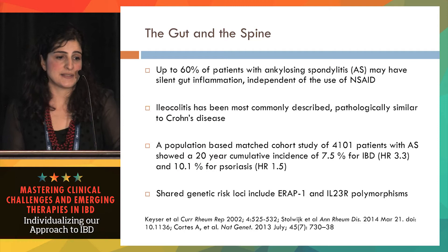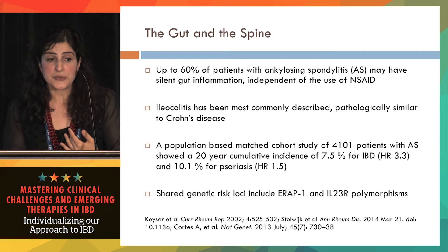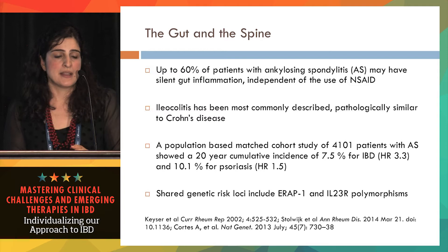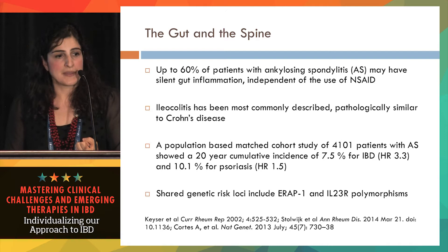We see that patients with ankylosing spondylitis have a higher incidence of IBD — which is intuitive — and also a higher incidence of psoriasis, another disease under the umbrella of spondyloarthropathies. The fact that they share polymorphisms in some patients in IL-23, IRF1, and other genes tells us there's a lot of immunopathology that they share in common.